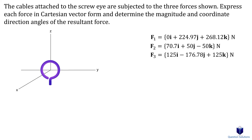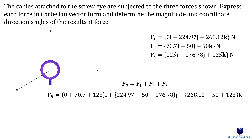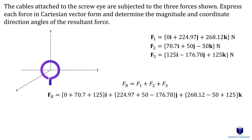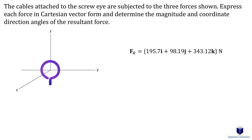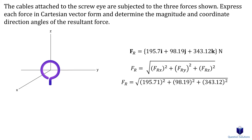To find the resultant force, we just add all the force vectors together. When doing addition in cartesian form, we add the same components together — I components with I components, J components with J components, and Z components with Z components. Don't forget the positive and negative signs for each component. Now we find the magnitude by taking each term in our resultant force, squaring it, adding them together, and taking the square root. Let's plug in our values and solve.